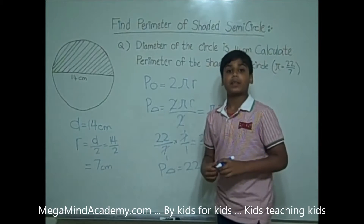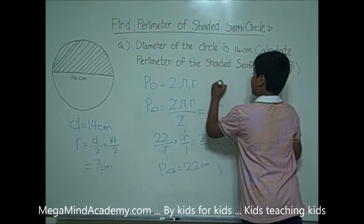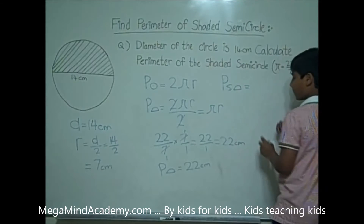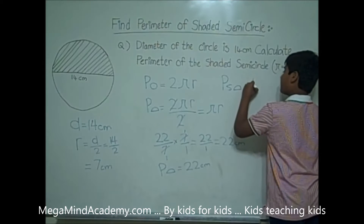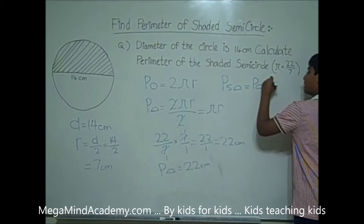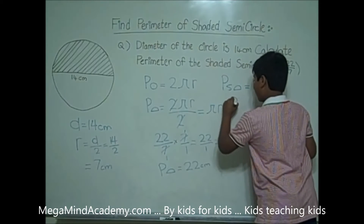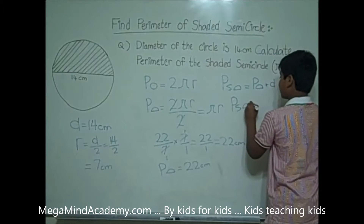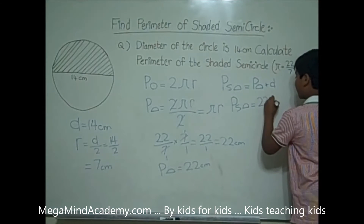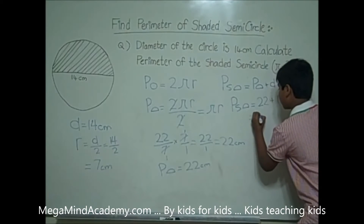Now we have to find the perimeter of the shaded semicircle. The perimeter — P for perimeter — of the shaded semicircle is equal to the perimeter of the semicircle plus the diameter. So the perimeter of the shaded semicircle equals 22, which is the perimeter of the semicircle, plus 14, which is the diameter. 22 plus 14 equals 36.